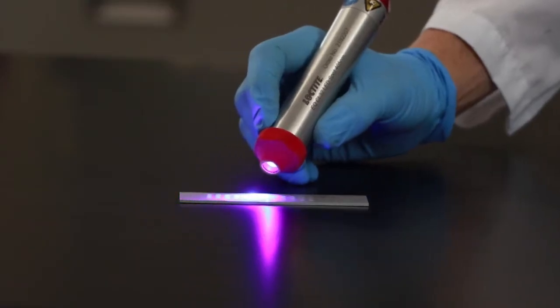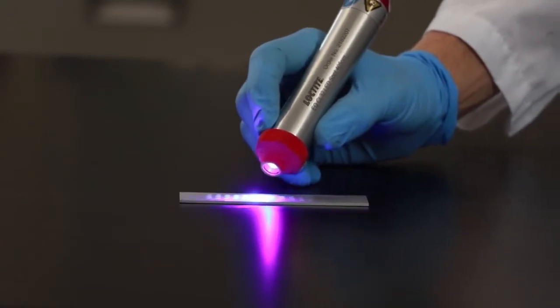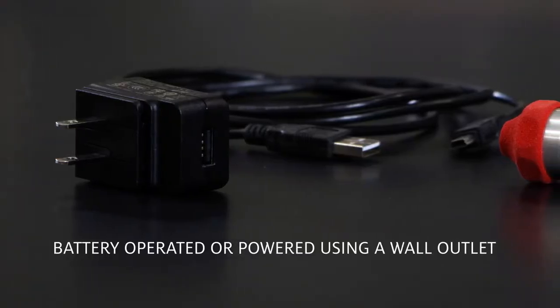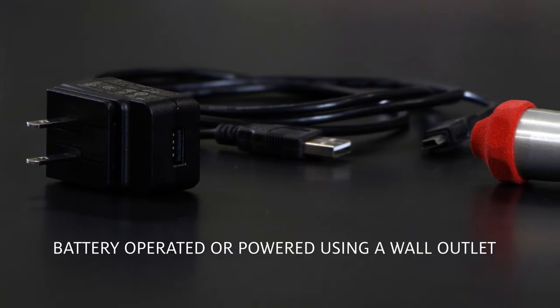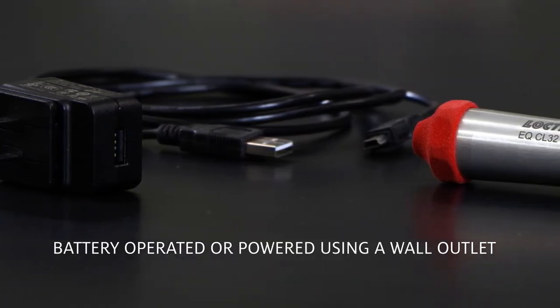For added flexibility, the Loctite CL32 LED spot system can be either battery operated as a handheld unit, or it can be powered using a wall outlet and mounted for stationary and robotic applications.